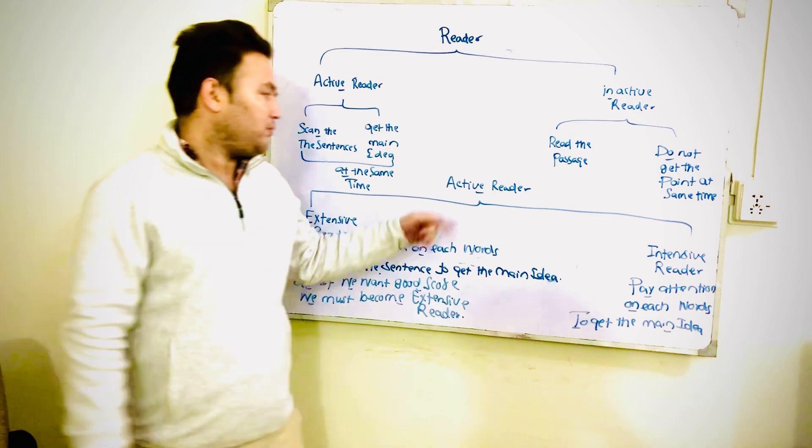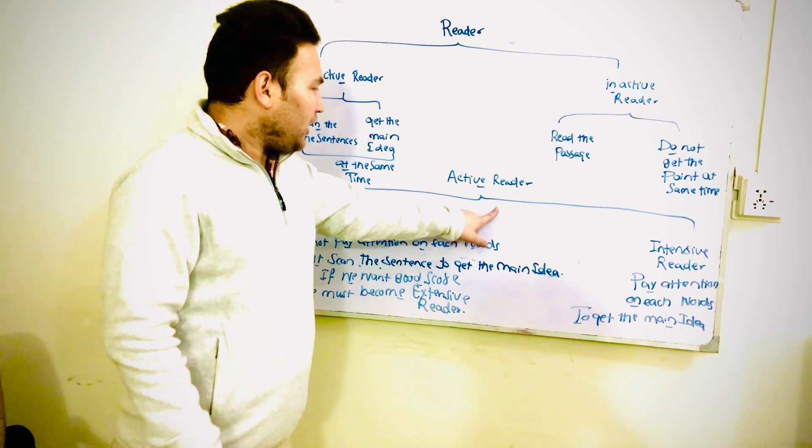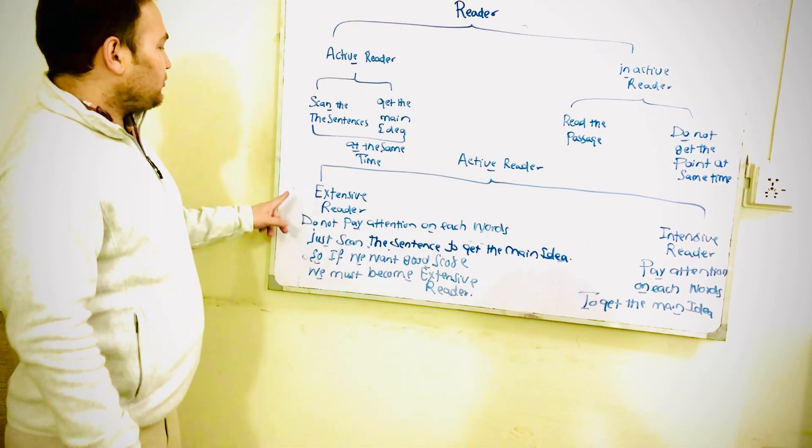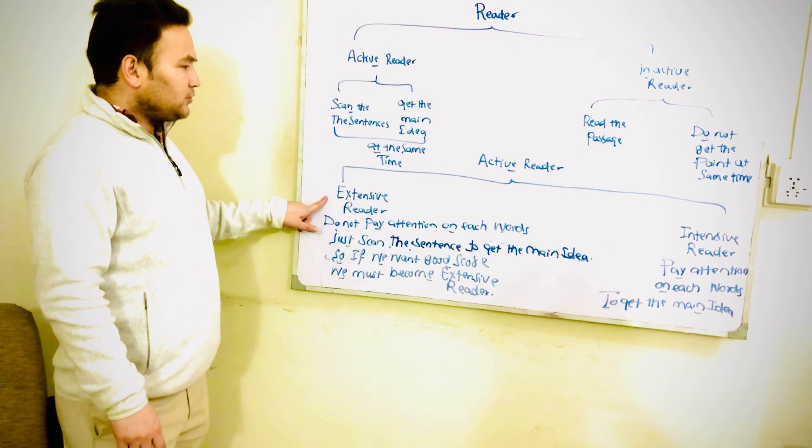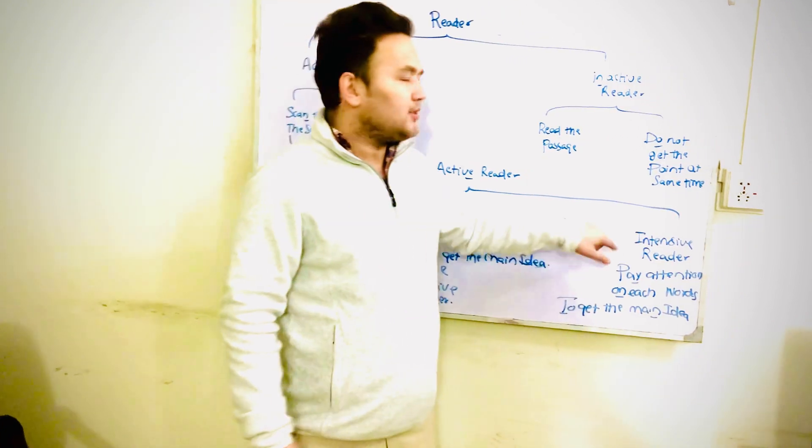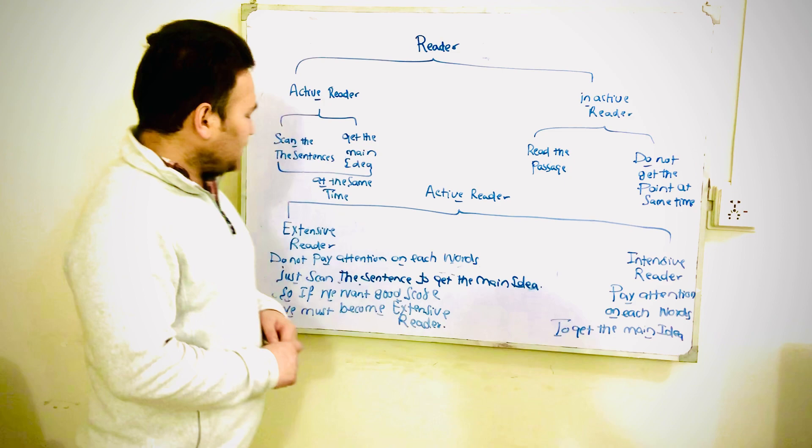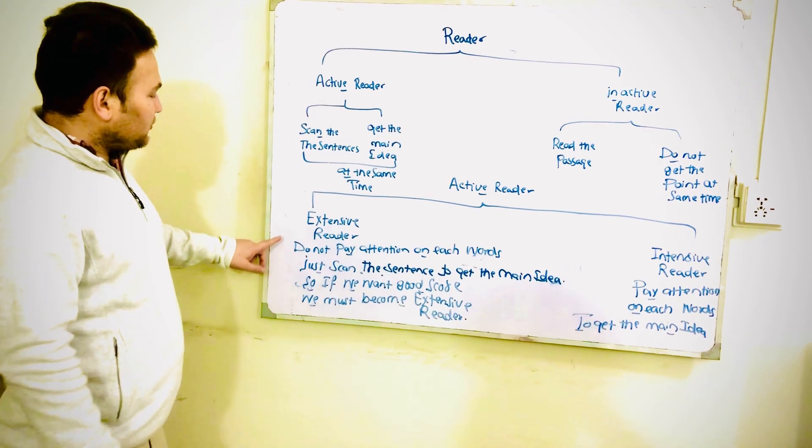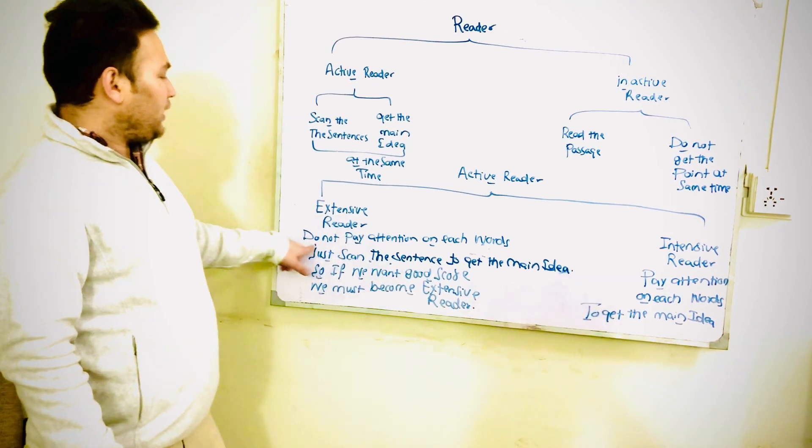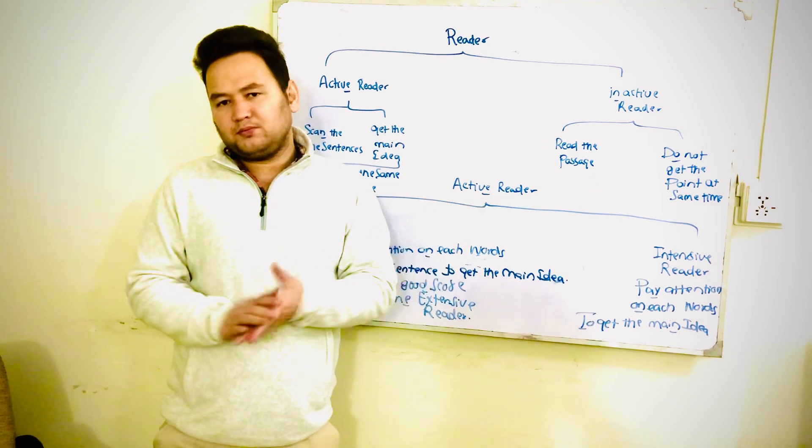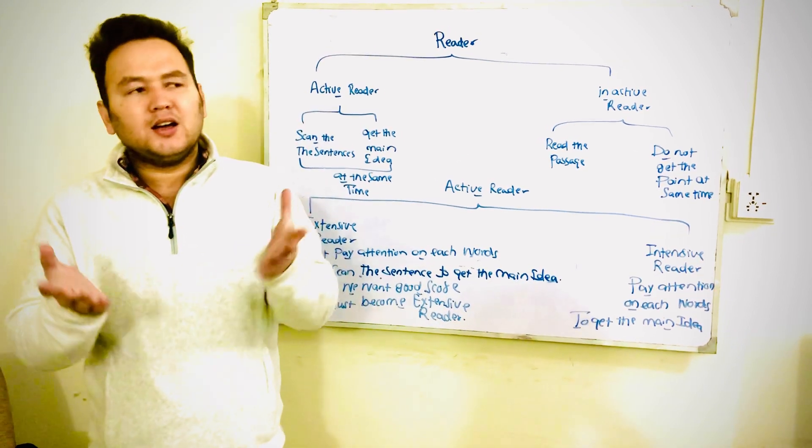Now we have two types of active readers: one, extensive reader; second, intensive reader. What is an extensive reader? An extensive reader means do not pay attention on each word. He doesn't consider about each word.